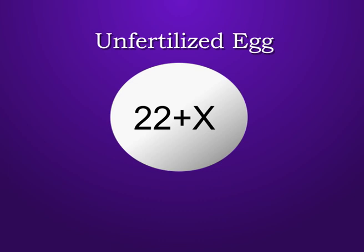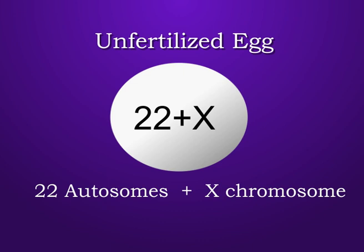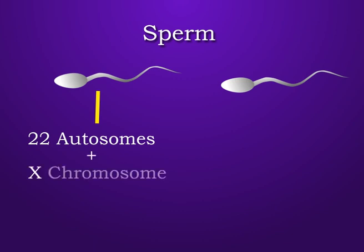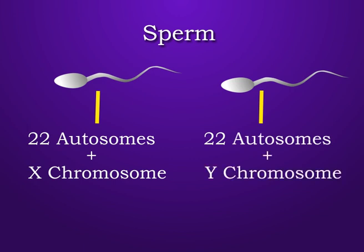Let us see the arrangement of chromosomes in an unfertilized egg. An unfertilized egg has 22 autosomes and one X chromosome. Whereas sperms have two types of arrangements: one type has 22 autosomes and one X chromosome, and another type has 22 autosomes and one Y chromosome.